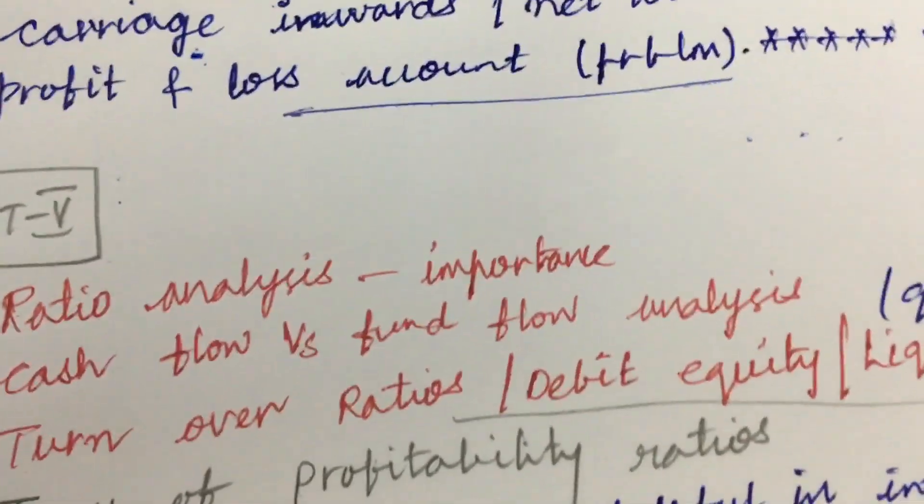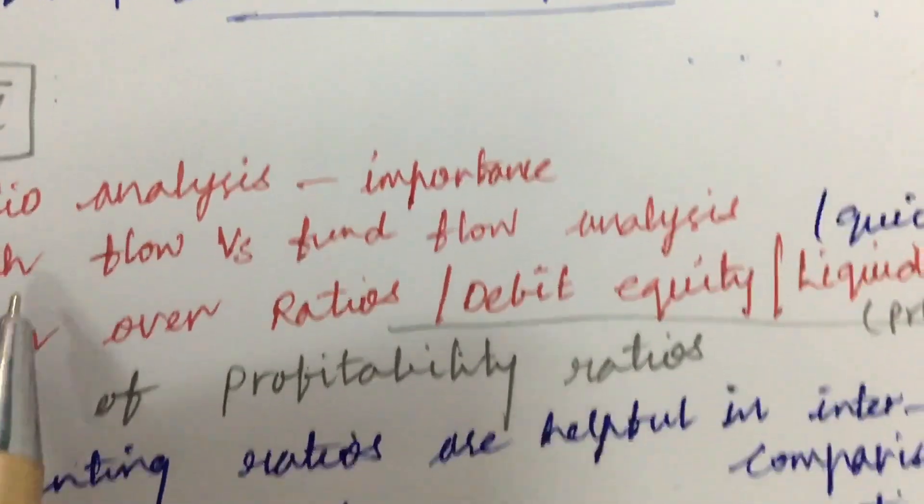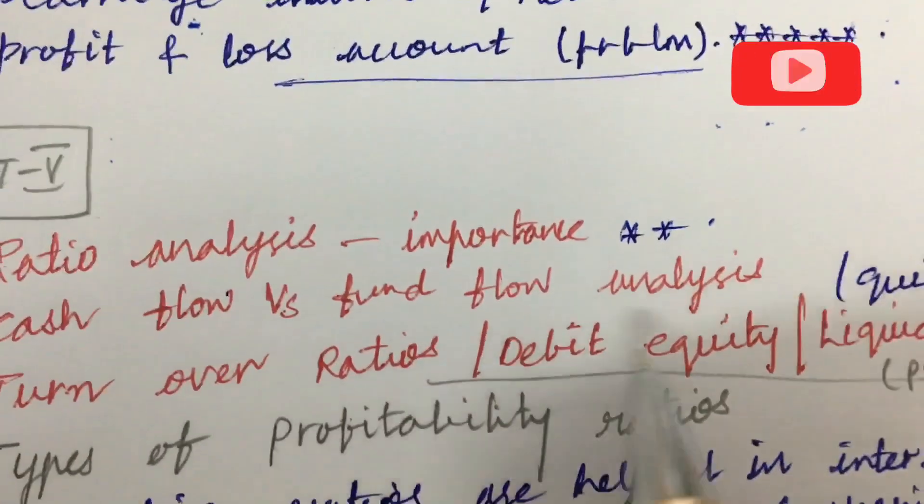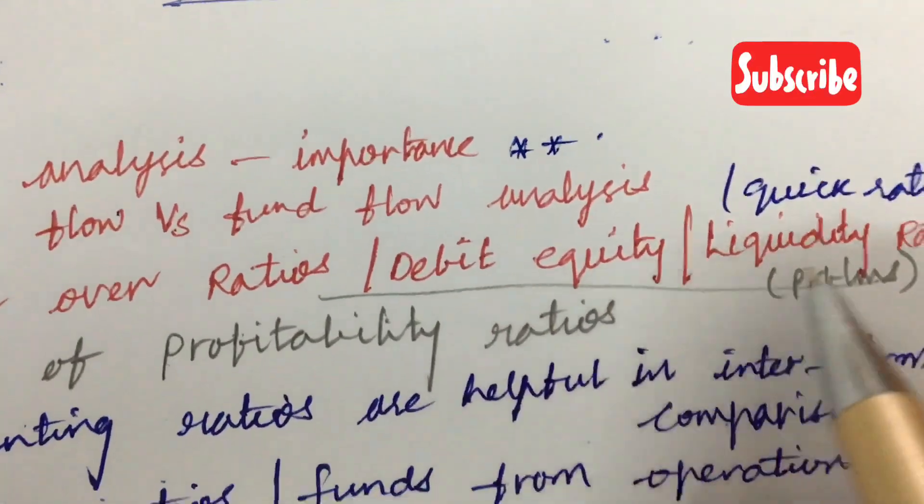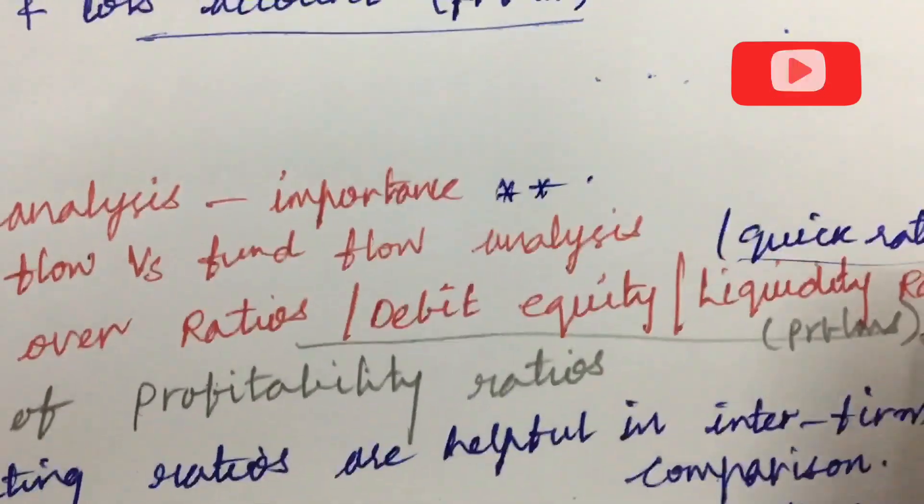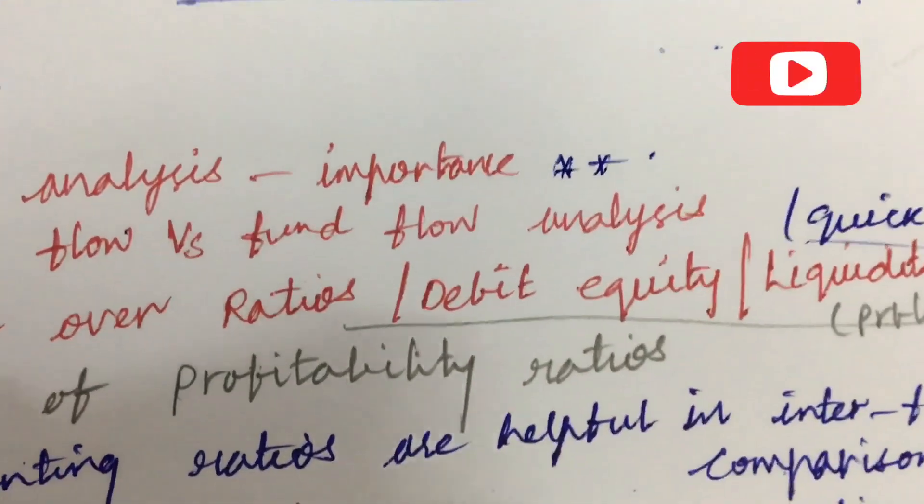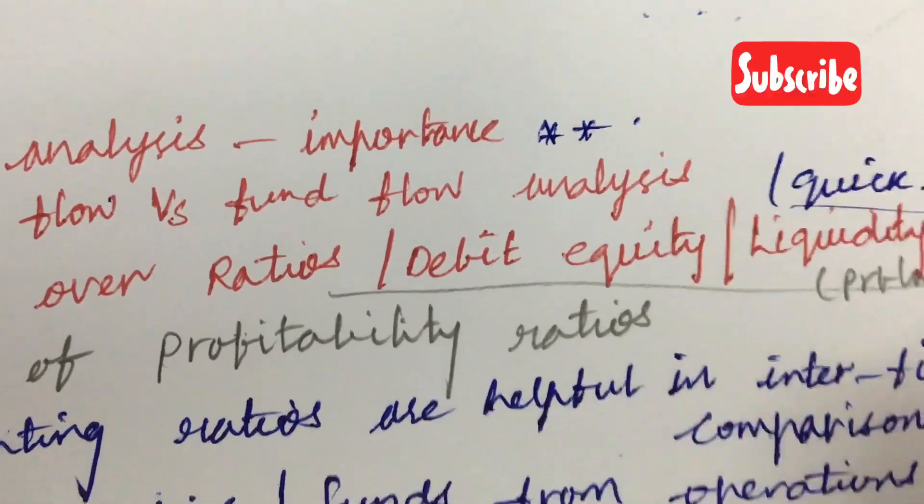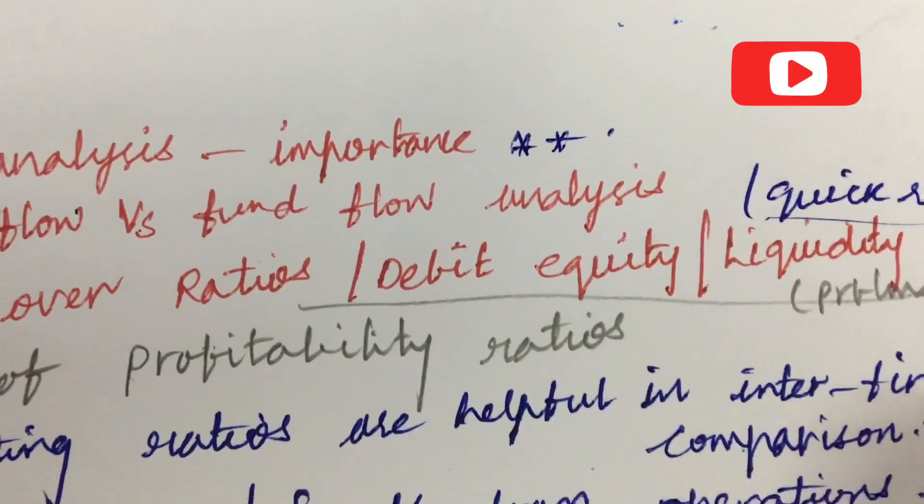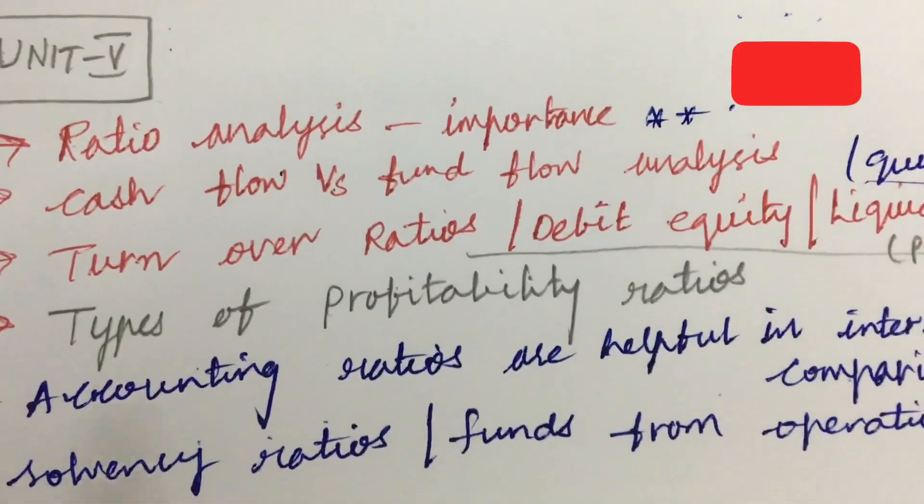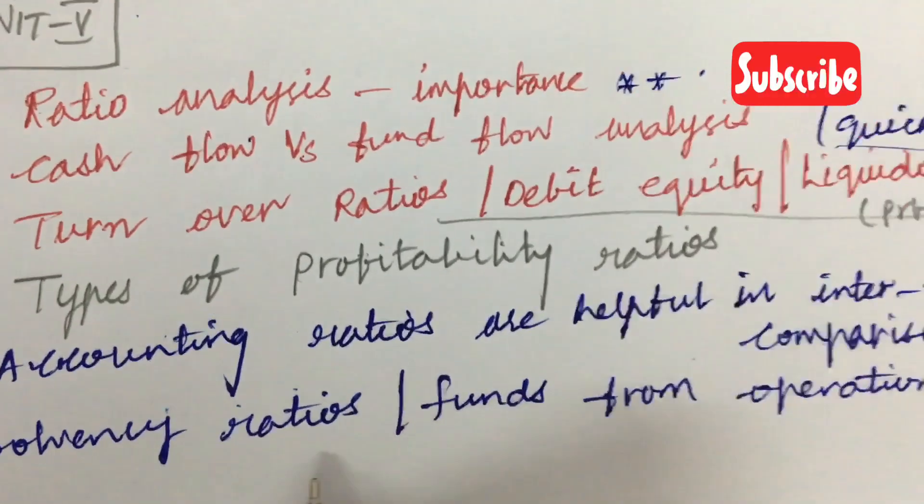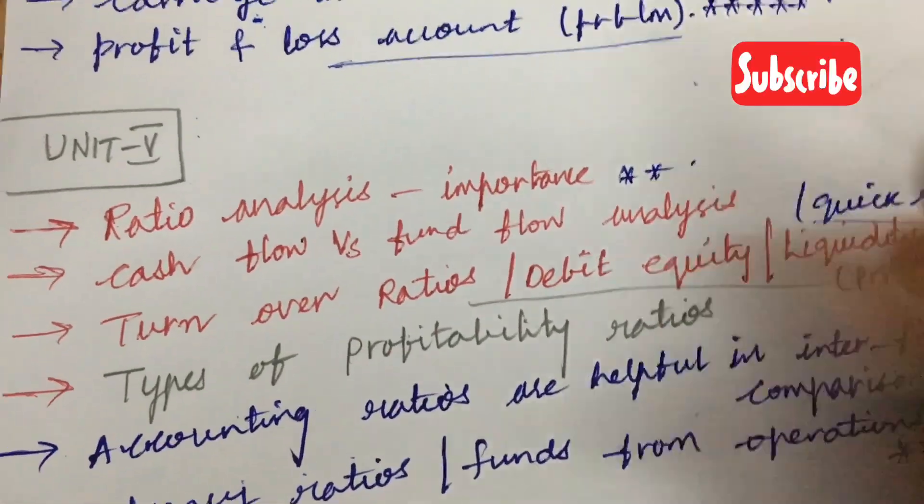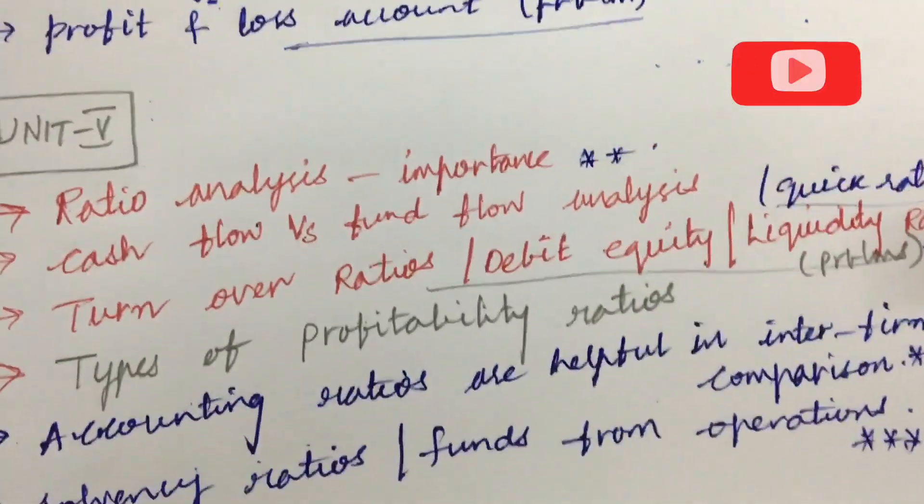The first question is about ratio analysis and its importance. Later, cash flow versus fund flow analysis, turnover ratios, debt-equity ratio, liquidity ratio as well as quick ratio—they are going to ask a problem based on the balance sheet to calculate. Later, types of profitability ratios as well as how ratios are helpful in inter-firm comparison. This is asked several times. A student going with Unit 5 needs to work out all these problems. Later, solvency ratios and funds from operations—explain these terms.